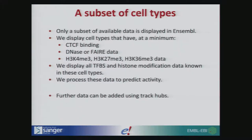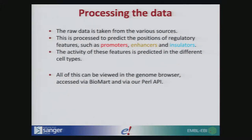We're taking data from various sources, processing it to predict the positions and activity of various features, and we're predicting the activity in cell types. You can view this in the genome browser, and you can access it via BioMart — both of which I will show you how to do. You can also access it via our Perl API, which requires a lot of installation, setup, and programming knowledge. We're not going to cover that here, but if you want to talk to me about it, please come and see me.